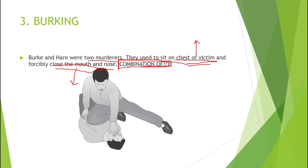Over time, Burke perfected a method they employed with great success. They would roam disreputable parts of the city at night, picking up beggars, and invite homeless victims to their home with promises of drink, food, and shelter. Once their guest was drunk enough, Hare would close the mouth and nostrils with his hands while Burke would sit mercilessly on the chest of the victim, immobilizing the chest — an effective combination of smothering and traumatic asphyxia. They succeeded 16 times in this method.